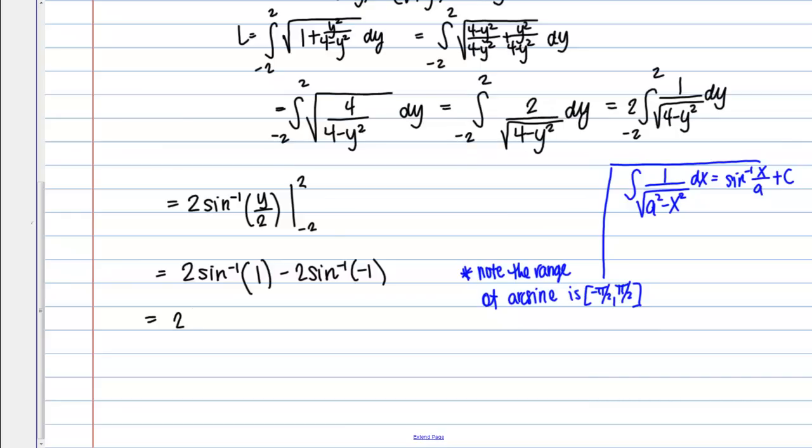So then inverse sine of 1, I'm just asking myself, okay, where is the sine 1? And if you know your sine values, that happens at pi over 2. Okay, and then minus 2 and we ask ourselves then where is the sine negative 1? And that happens at negative pi over 2, if we're just considering this range here. So then this becomes pi minus negative pi, so plus pi, or 2 pi.